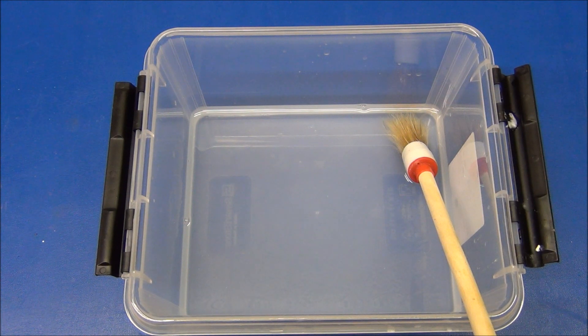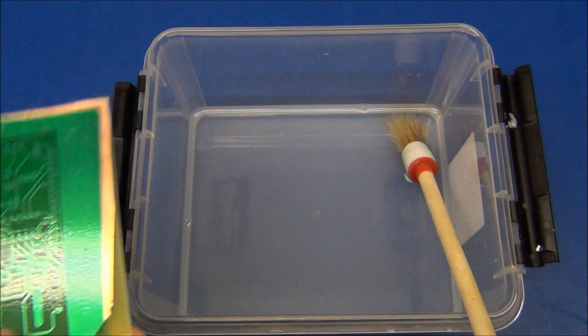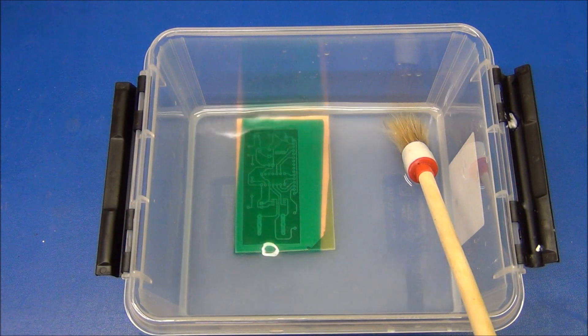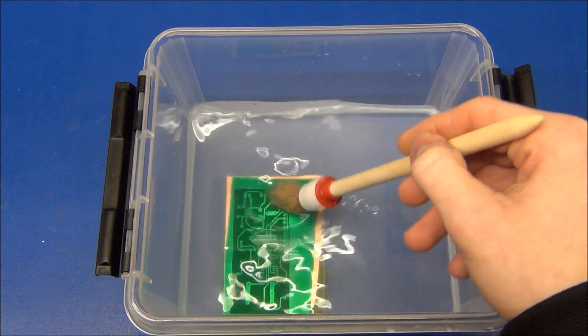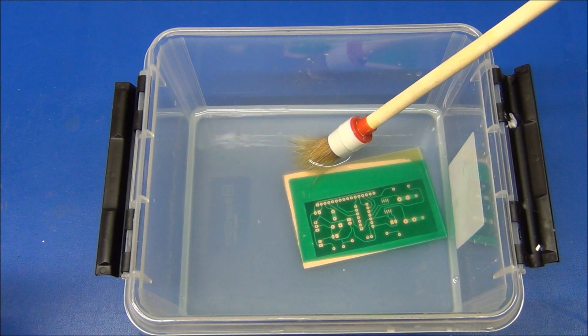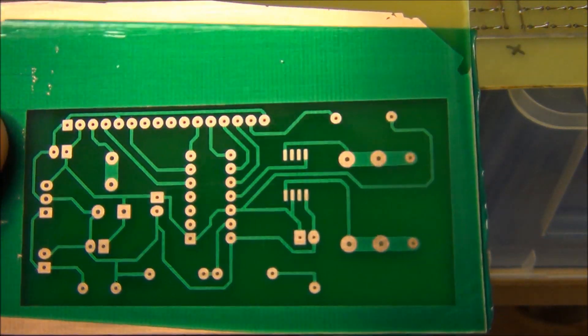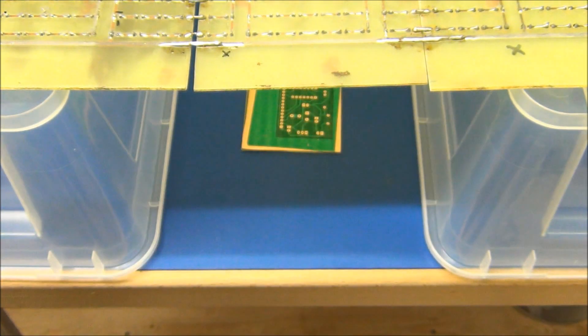Bring back your solution of sodium carbonate and develop the board. And when you see the board is done, leave it in there for about two minutes to make sure. Once the board is done, clean it with water and harden it under UV light for at least 15 minutes.